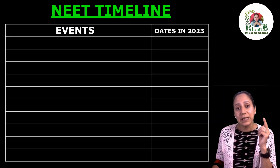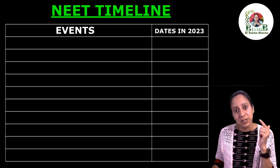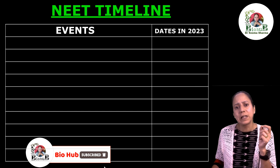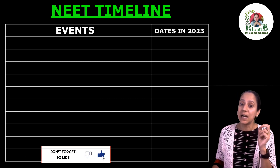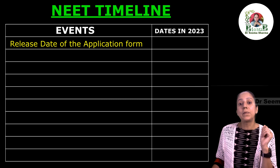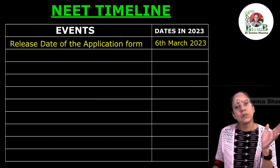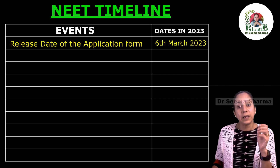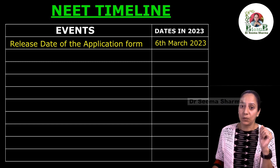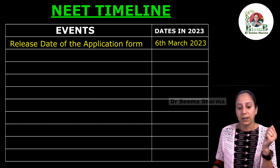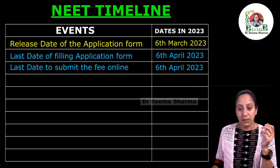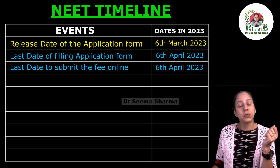Next is the NEET timeline, which every NEET aspirant, biology teacher, mentor, and parent should know clearly. First, the release date of the application form is generally in the first week of March. Then one complete month is given for filling up and uploading the form, and the last date to submit the online fee this year was 6th April 2023.